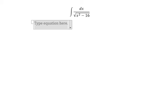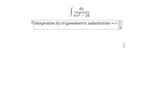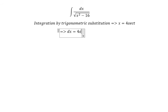We need to use integration by trigonometric substitution. So in here we have x equal to 4 secant t. We do first derivative on both sides, we got dx equal to 4 secant t times tangent t dt.